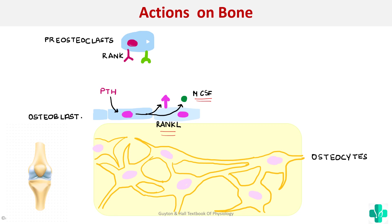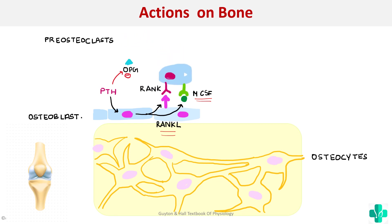The pre-osteoclasts already had receptors but were prevented from being activated by the presence of a decoy receptor, osteoprotegerin (OPG). Parathormone will inhibit this OPG and also stimulate osteoblasts to produce RANK ligand and MCSF, so the pre-osteoclasts will bind the original ligand and be activated to form osteoclasts.